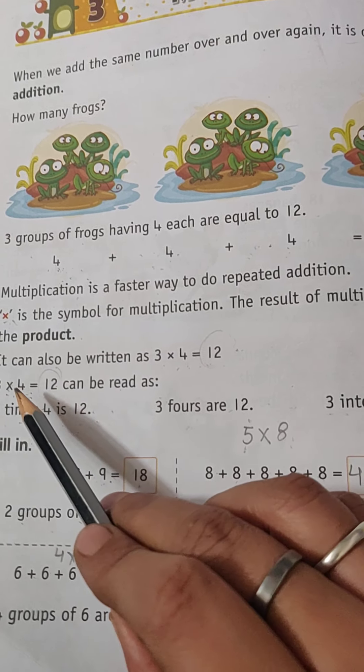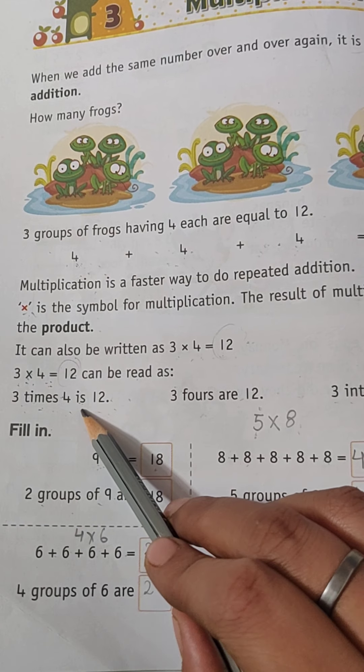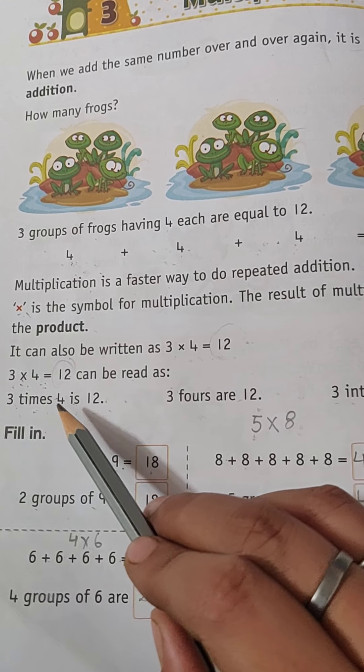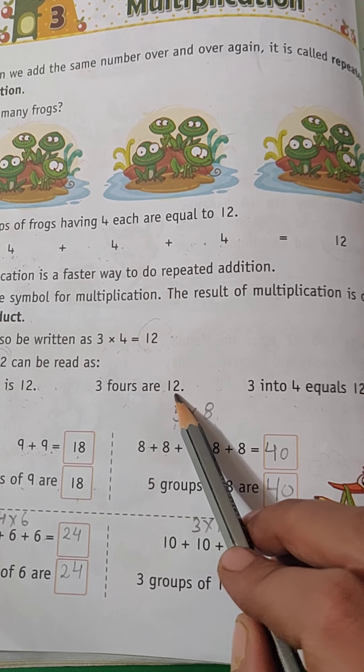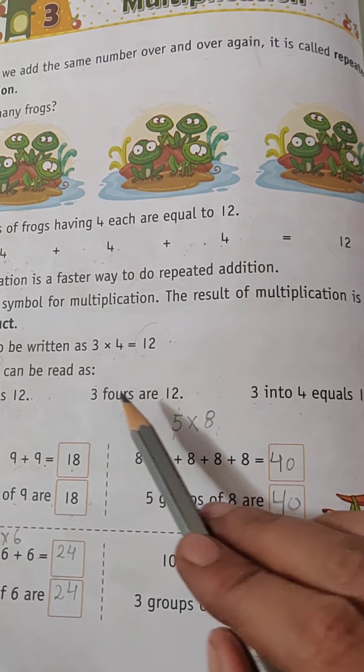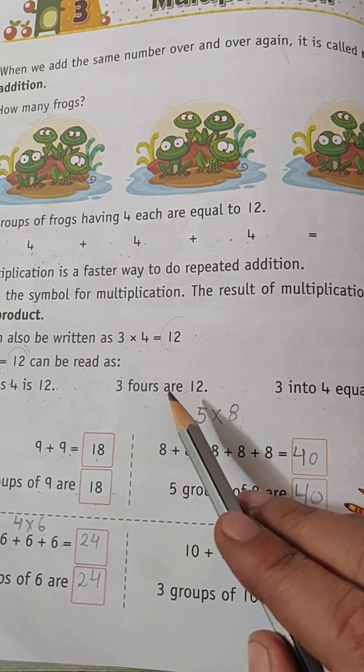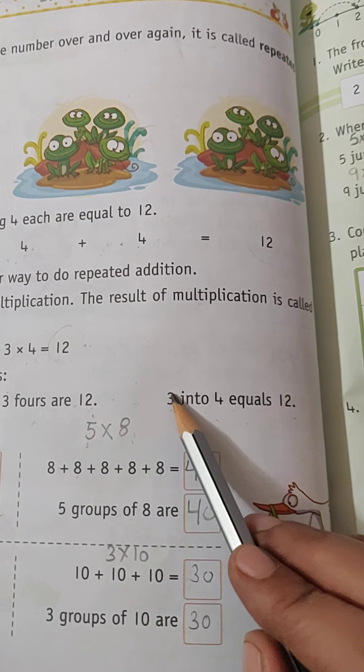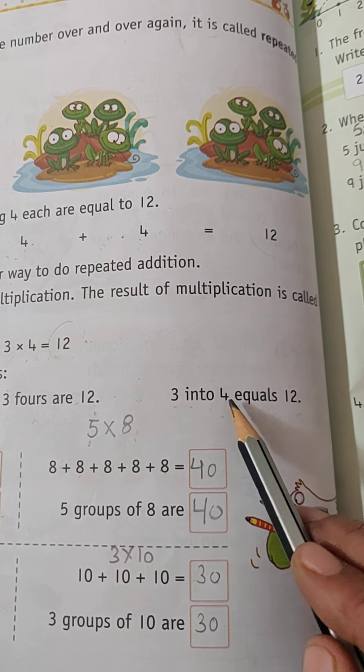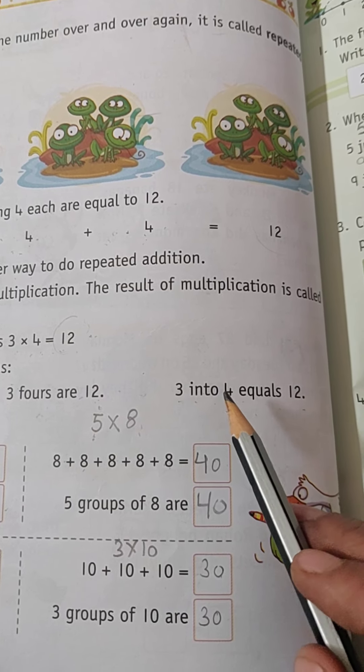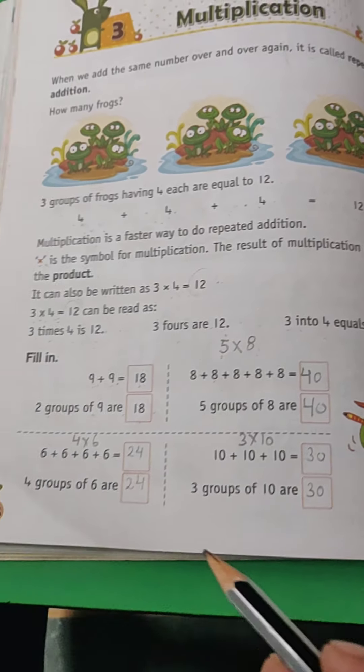There are three ways to write the same thing in multiplication. Like three times four, then three fours are 12, which you generally say when you are reciting the tables. So three into four, then you use the 'into' word also to show the multiplication equals to 12. These are the different ways to read the multiplication.